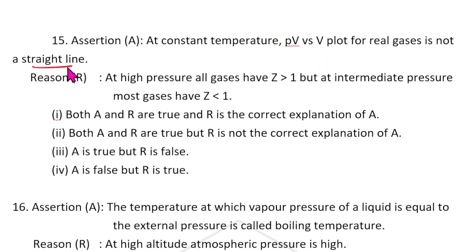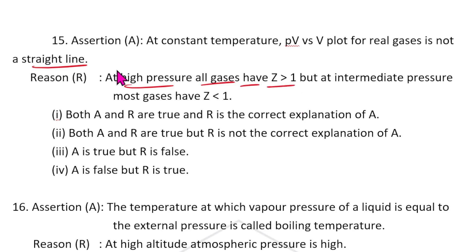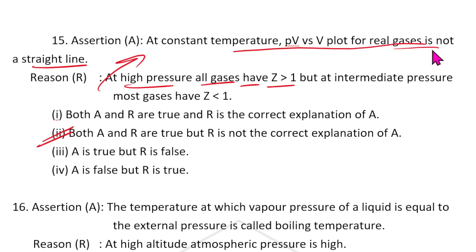Question 15: At constant temperature, a pV versus V plot for real gases is not a straight line — this is correct. At high pressure, all gases have compressibility factor Z > 1; at intermediate pressure, most gases have Z < 1 — this is also correct. However, this is not the reason for the non-linear pV vs V plot. Both A and R are true but R is not the correct explanation for A. The answer is the second option.